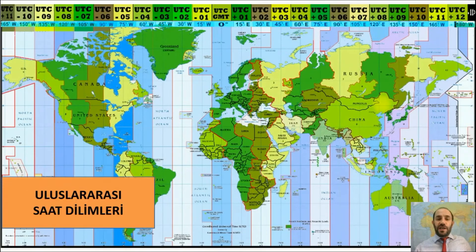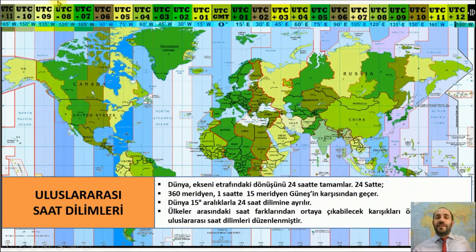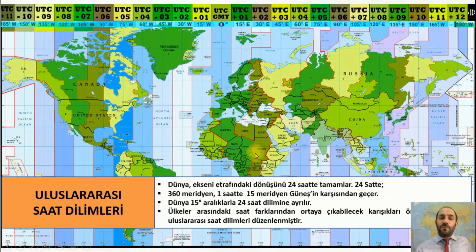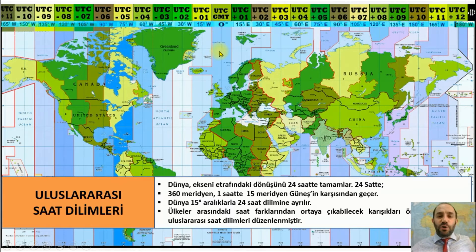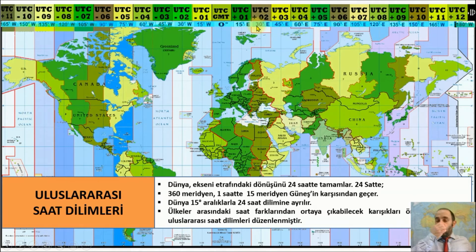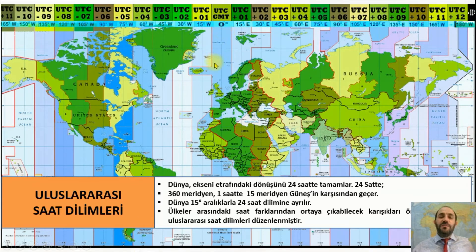Uluslararası saat dilimlerine değinmemiz gereken bazı özellikler var. 24 tane ulusal saat dilimi var. Burada Greenwich 0 olarak temel alınır. Greenwich'e göre doğu ve batıda 12'şer tane, toplamda 24 tane saat dilimi vardır. Greenwich hem 0 hem de 24. saat dilimi olarak kabul edilir.